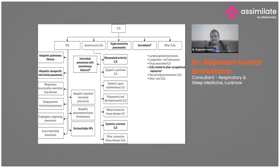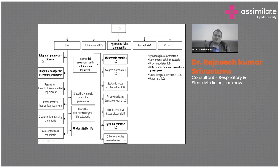These disorders are labeled as ILD because of common clinical, radiological, and histological manifestations. As seen in this classification slide, it is a vast group containing multiple diseases. The most important disease is idiopathic pulmonary fibrosis. Whenever we talk about ILD, the first thing we must do is classify whether it is IPF or non-IPF, as IPF carries the worst prognosis.